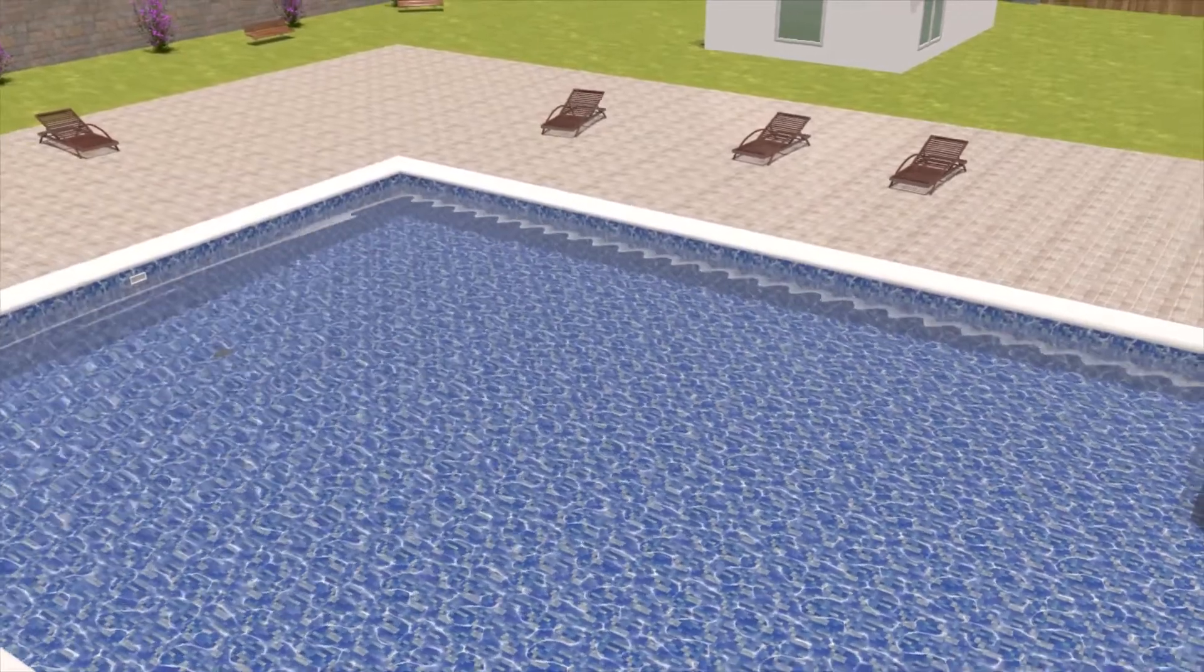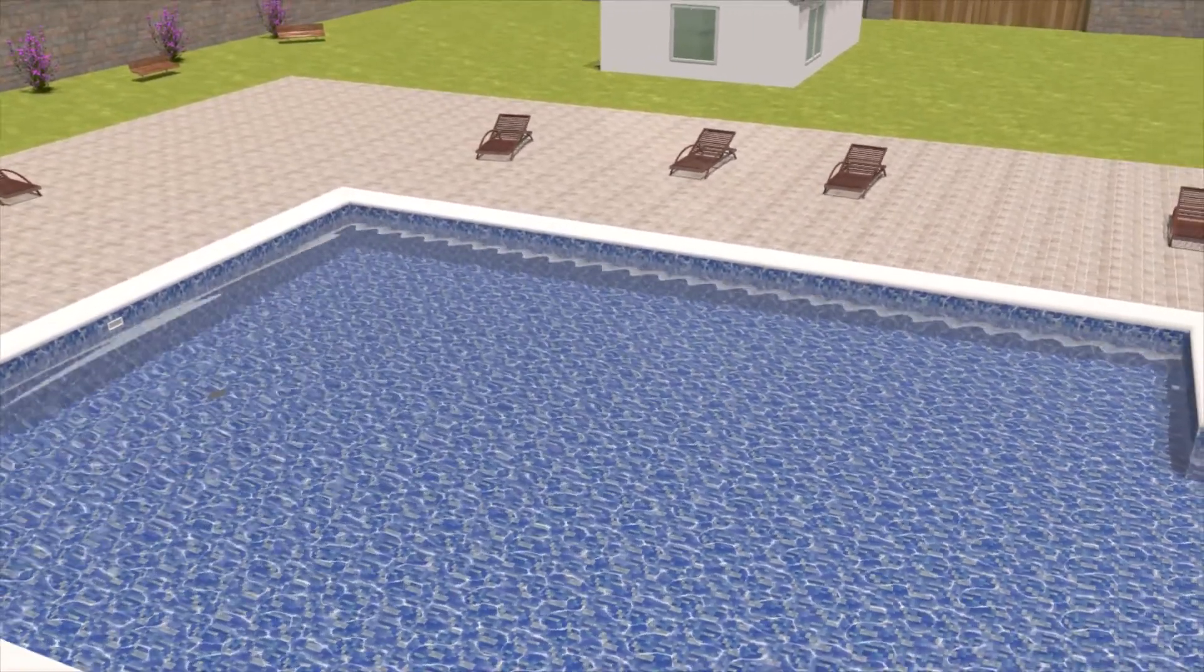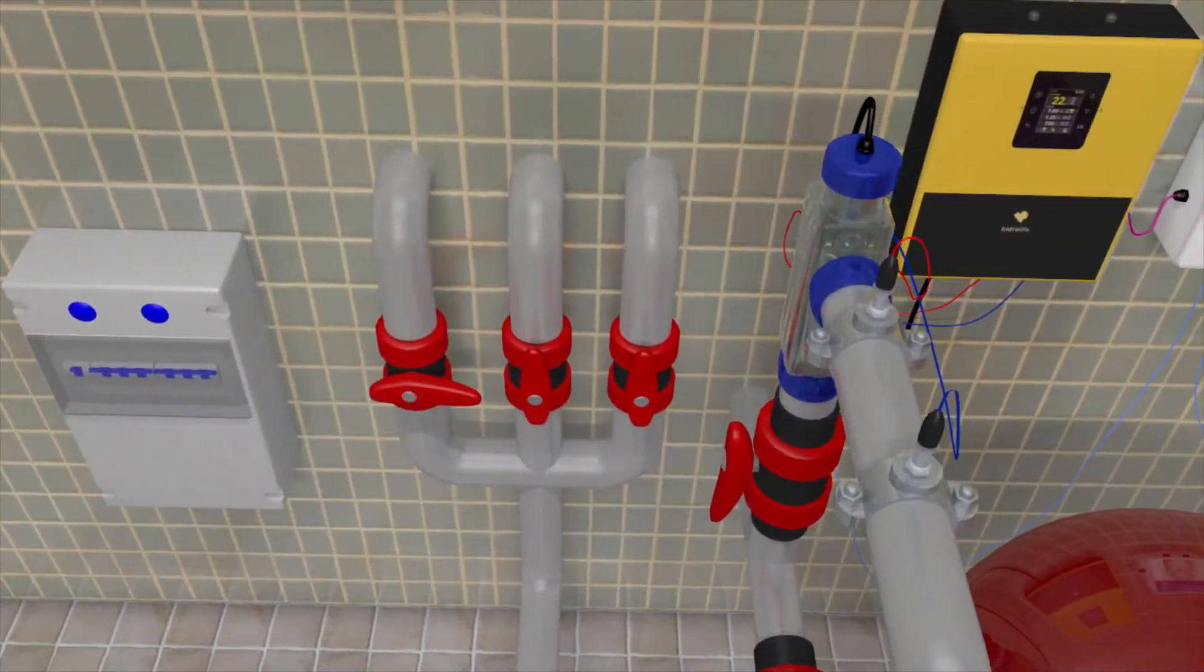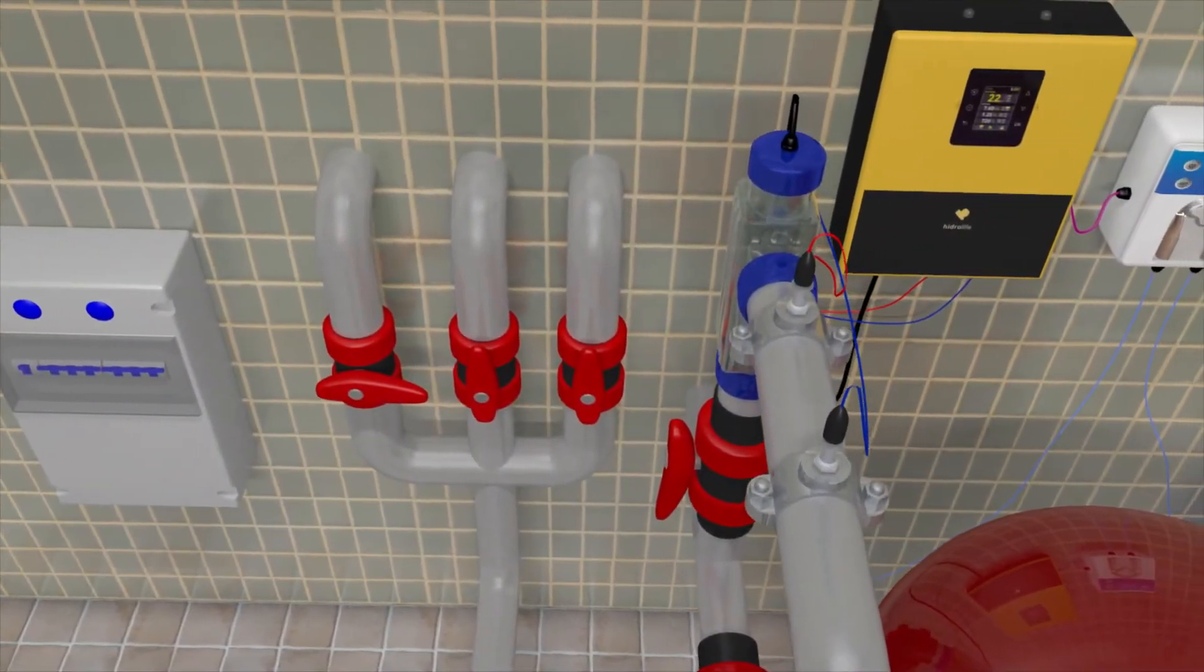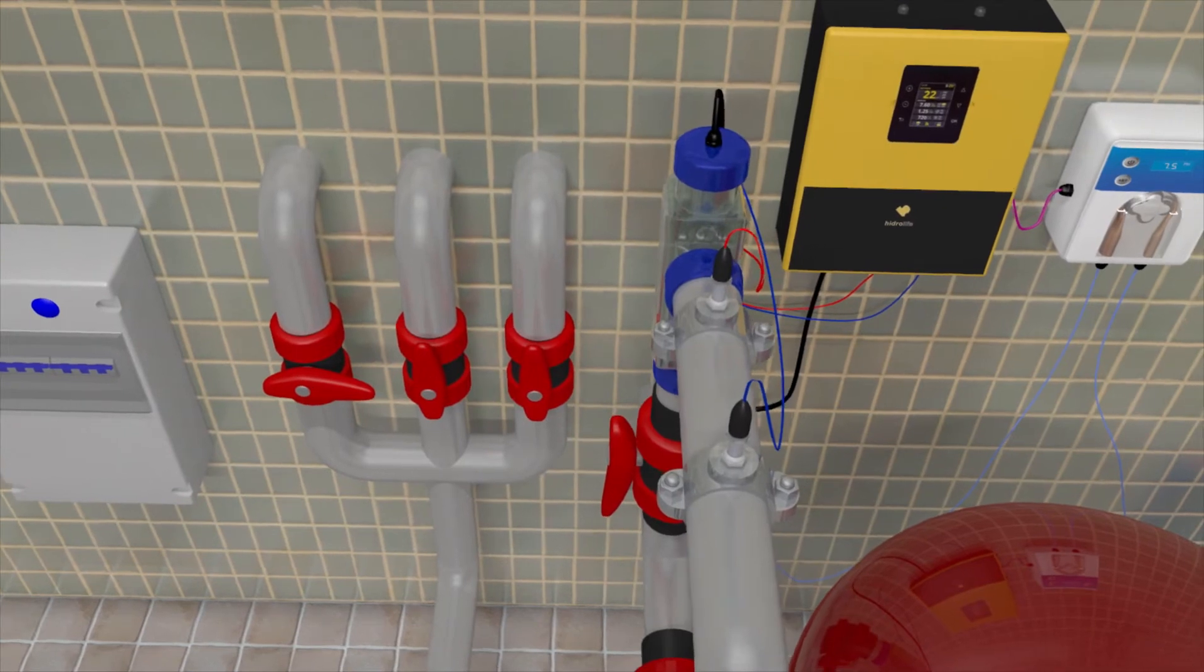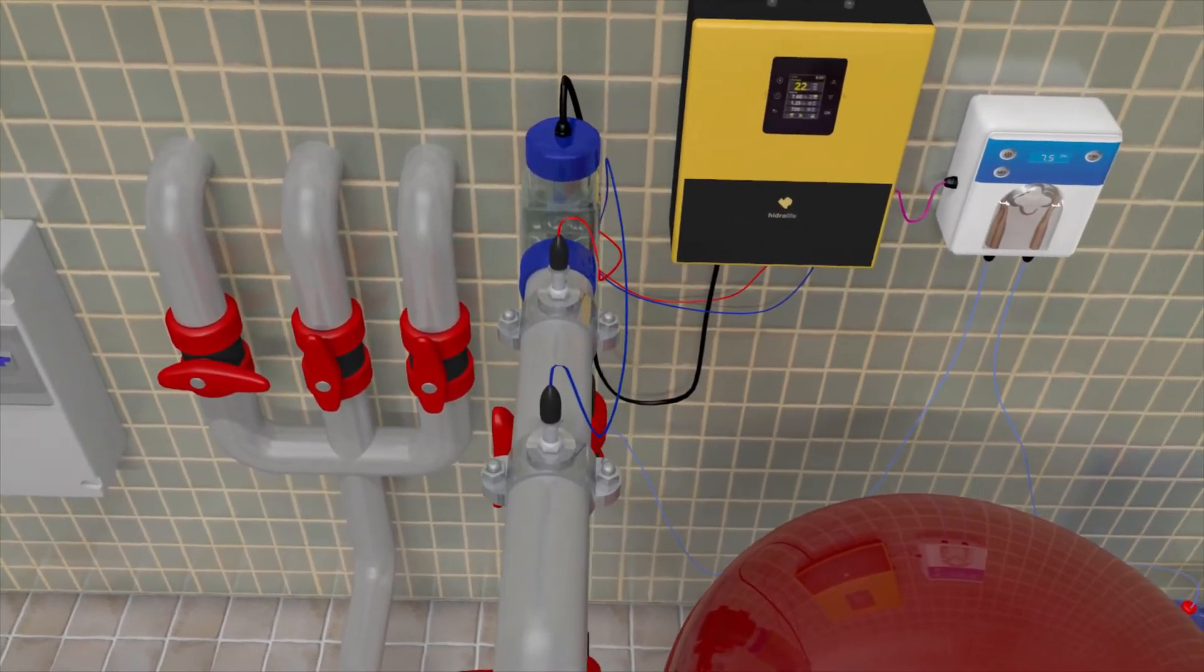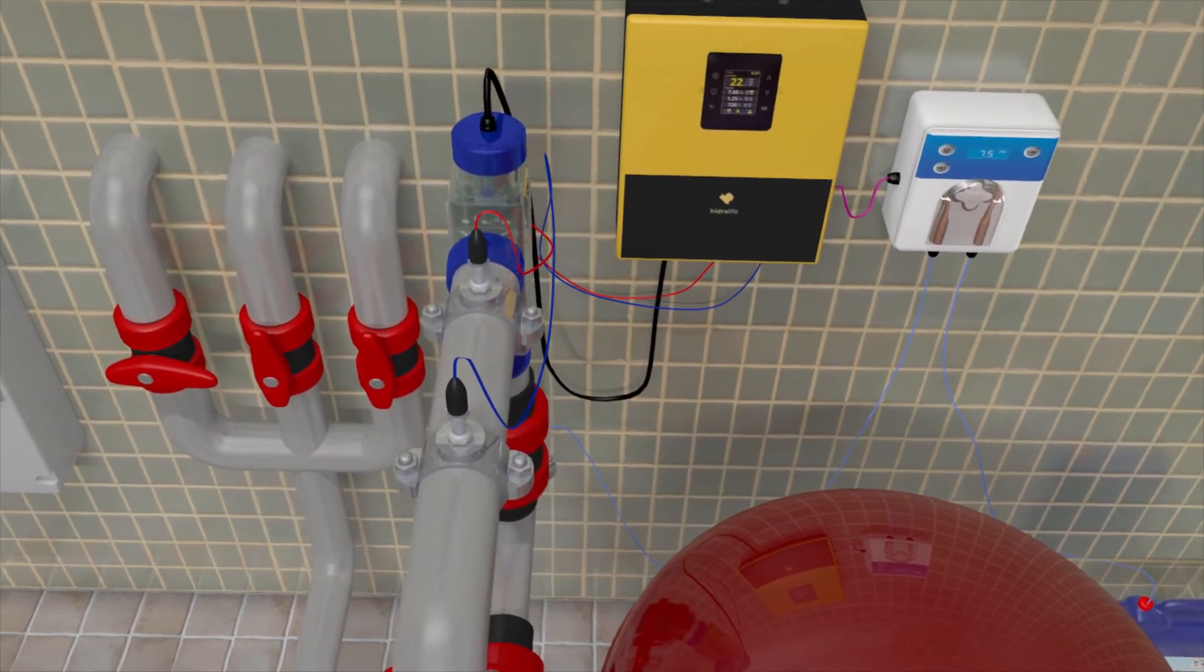In conclusion, the salt electrolysis system is a much more natural and environmentally friendly system than adding chlorine to the water. It is important to use the appropriate sized equipment, taking into account the size of the pool and the amount of people that use it.